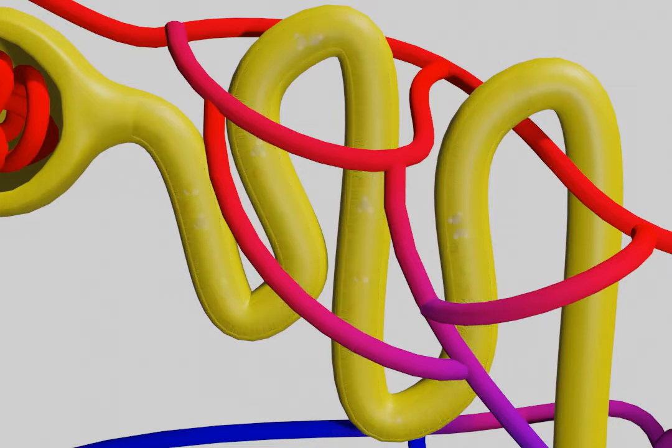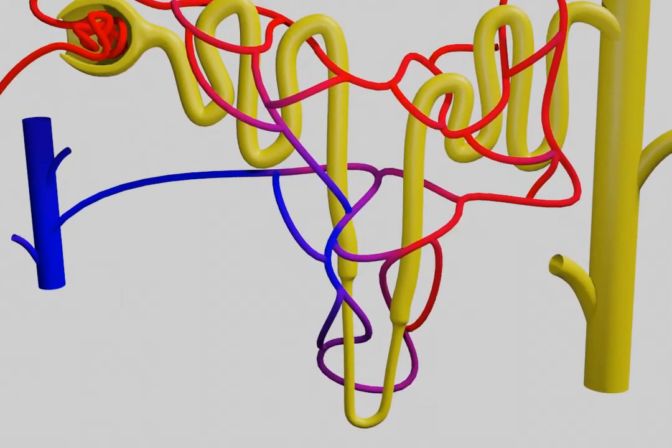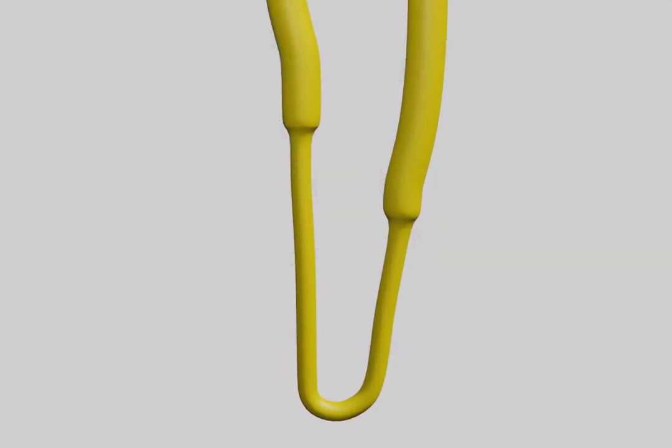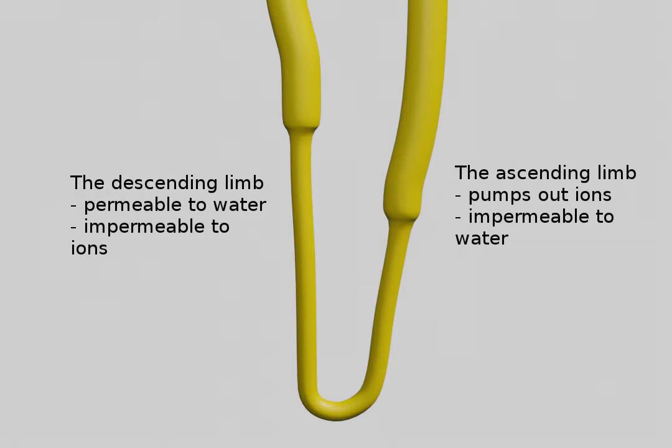After the filtrate passes through the proximal tubule, it proceeds to the loop of Henle. The descending limb is permeable to water but not ions, while the ascending limb is permeable to ions but not water.